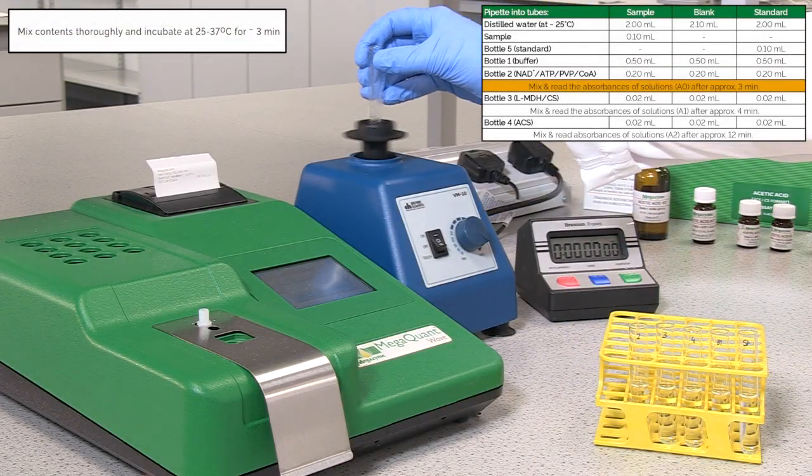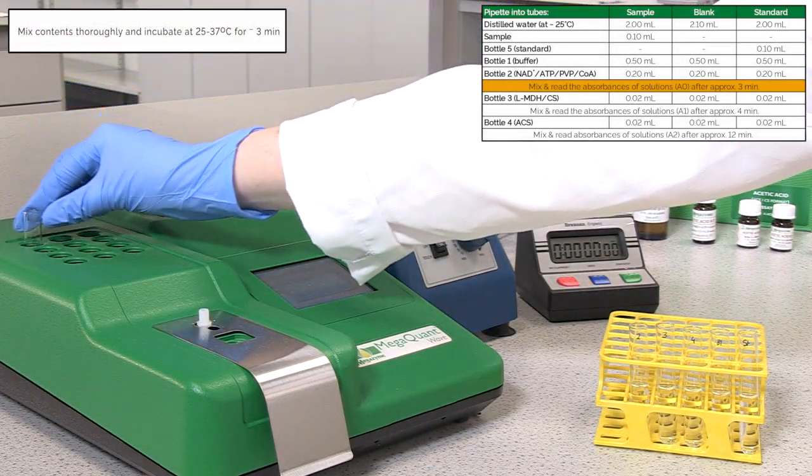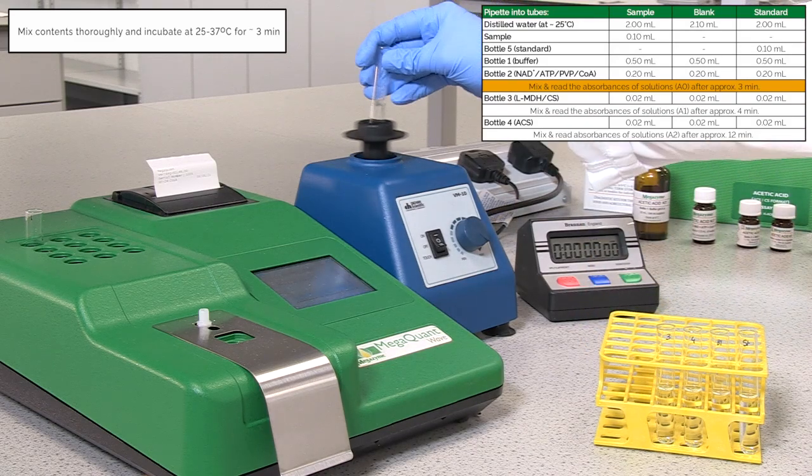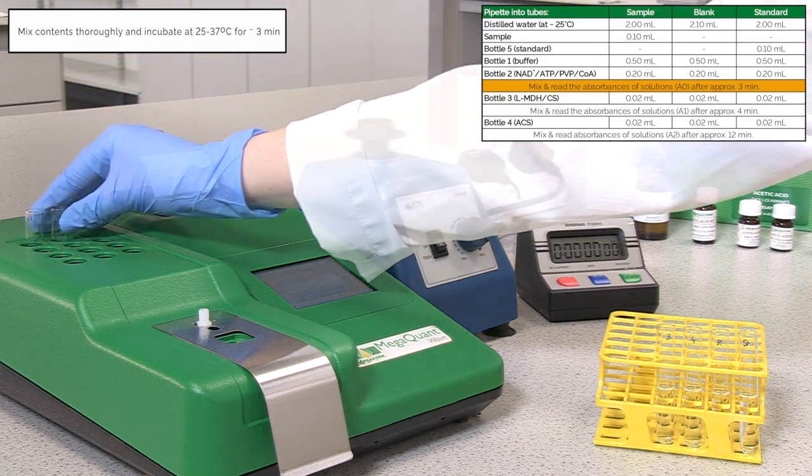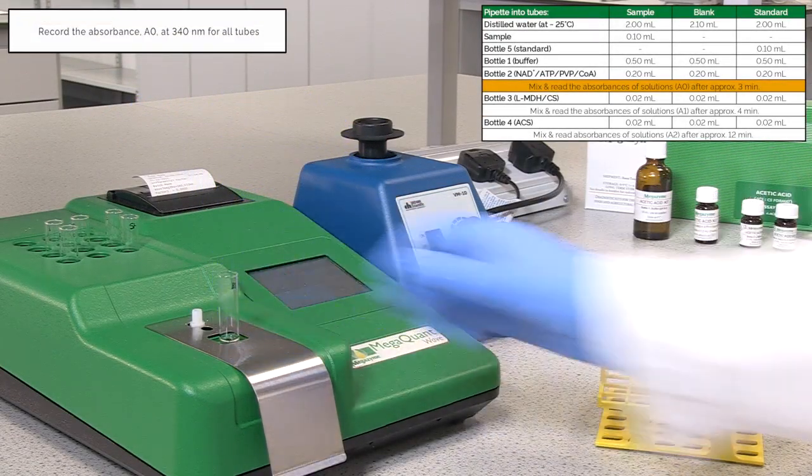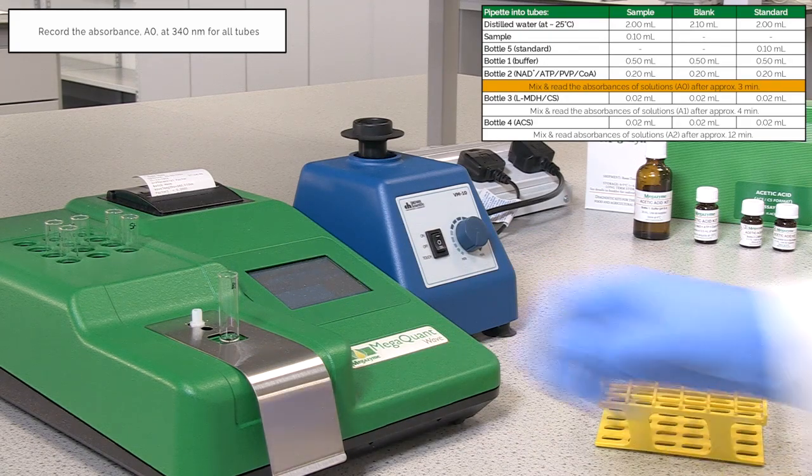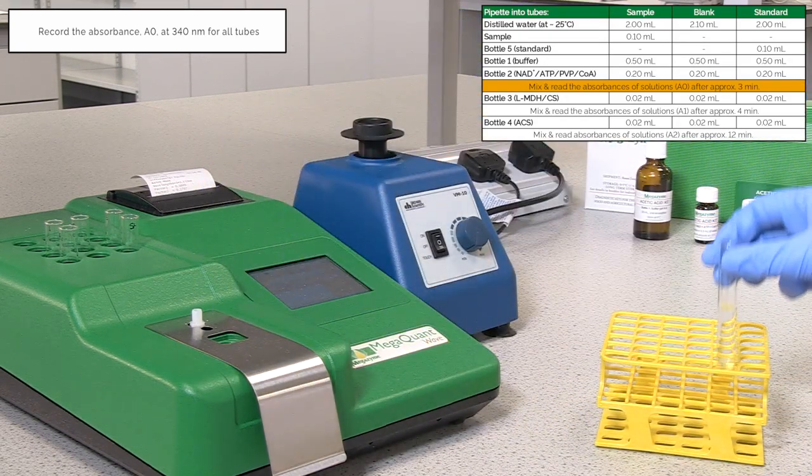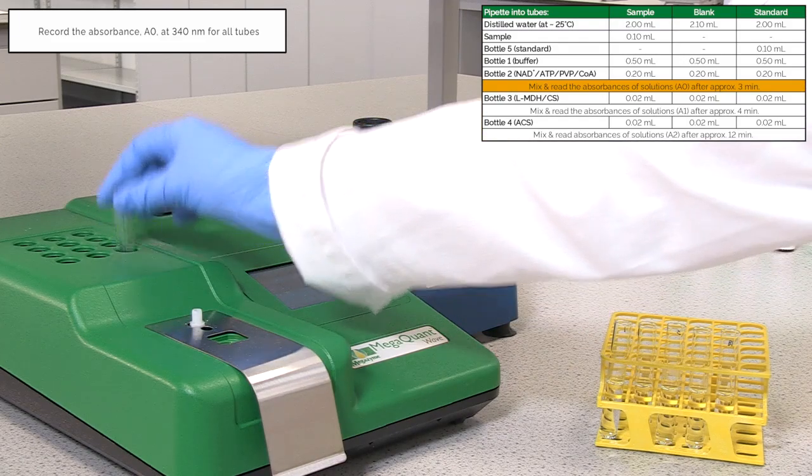When all of the components have been added, mix the tube contents thoroughly and incubate the tubes at between 25 and 37°C for approximately 3 minutes. After 3 minutes, record the first absorbance reading, A0, at 340 nm for all of the assay tubes.